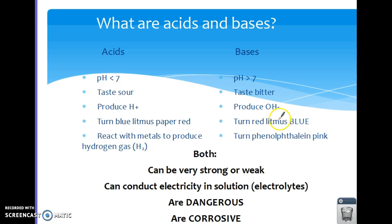They turn red litmus paper blue. I try to remember blue for bases, B and B, and they will also turn phenolphthalein pink, which in case you see that in a chemical reaction, that's why we put that up there.